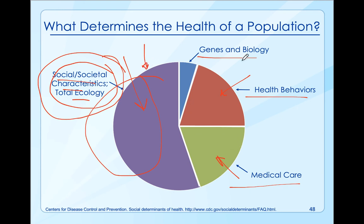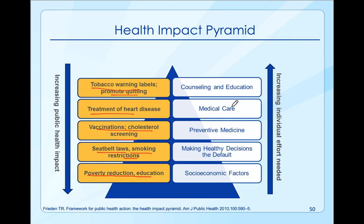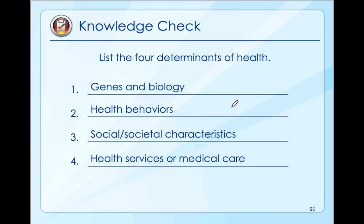The reality is, where you work and play really impacts your overall health and well-being. Where you work and play also impacts your health behaviors. Where you work, live, and play determines your access to medical care. Let's say you live in rural America - you might have a hard time accessing medical care, or a hard time finding somewhere you can walk safely. Maybe you work and live in an urban environment where you don't feel safe walking. Think about all of these different determinants of health: genes, biology, health behaviors, societal characteristics, health services, and medical care.